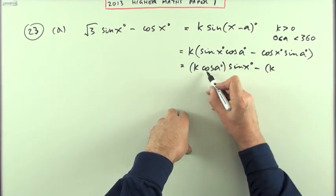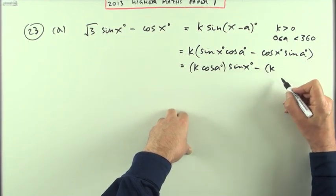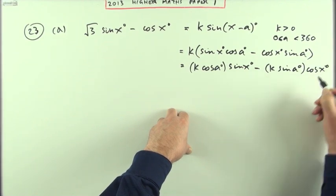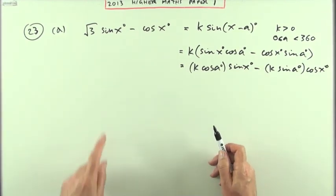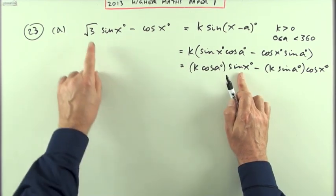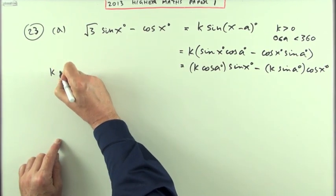So I've got then k cos a sine x minus, I'm just putting brackets in to emphasize the coefficient because those are fixed numbers, those are constants whereas that's a variable. And then comparing them term for term, that says for sine x I should have a root 3 in front of it.